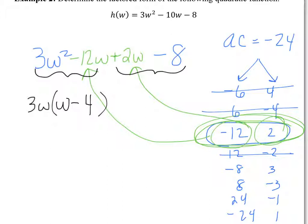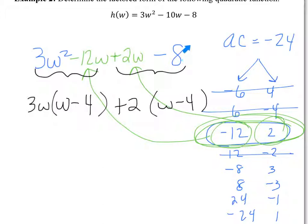For this method to work, what does the other parentheses have to be? For grouping to actually work, what has to be in this other parentheses? W minus 4 again. Start by putting it there. Can I take something out of these two terms over here such that I'll end up with W minus 4? I take out a positive 2 — make sure you put a positive, not just a 2. If I take a 2 out of here, I'm left with W; take a 2 out of here, I'm left with negative 4.